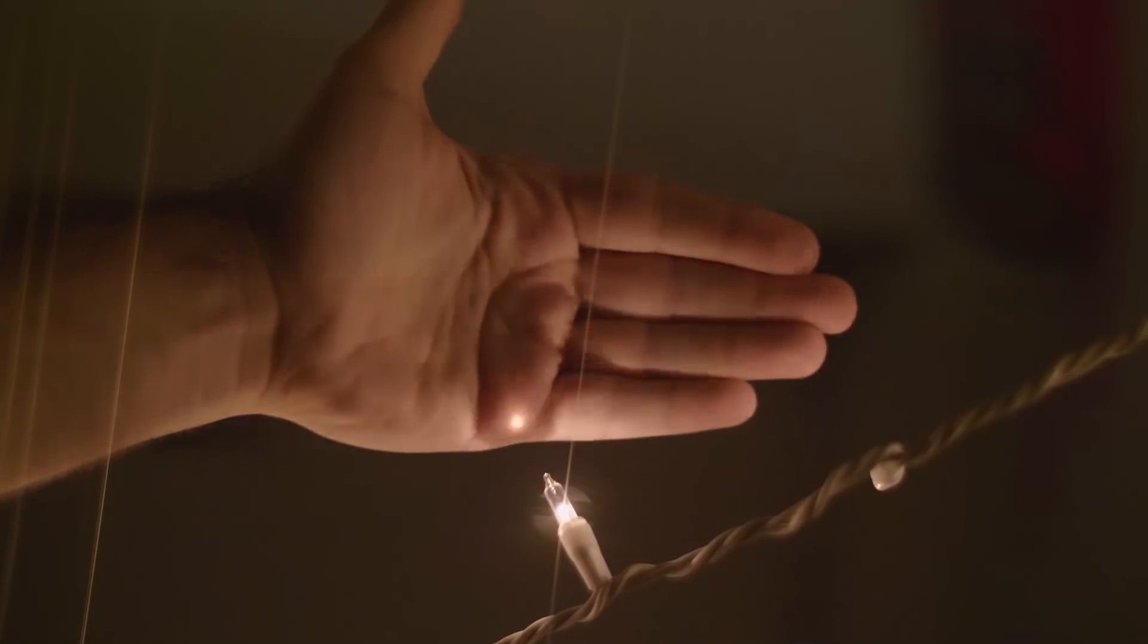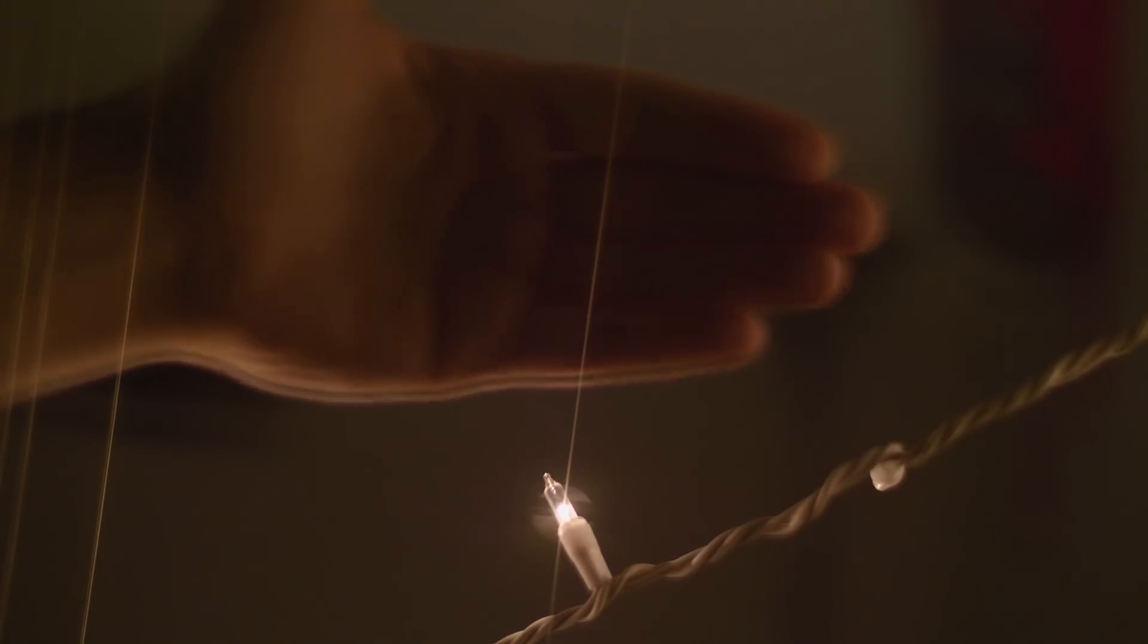It doesn't matter how close you get your hand to your eye. You can never block out the streak. It seems like the streak is actually jutting up just behind your hand. The only way to block the streak is to block the light itself.